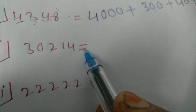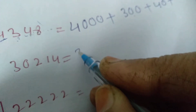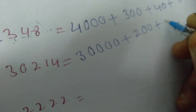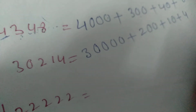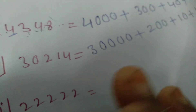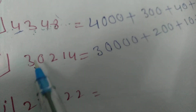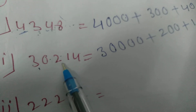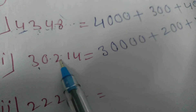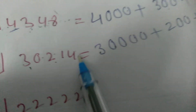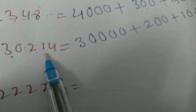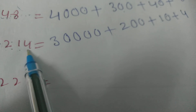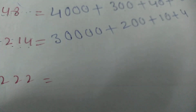Here is 30,214. Write the first number 3, count 4 digits after: 30,000. Plus — the next digit is 0, skip it. Move to 2, count 2 digits after: 200. Plus 1, count 1 digit after: 10. Plus 4. So 30,214 = 30,000 + 200 + 10 + 4.